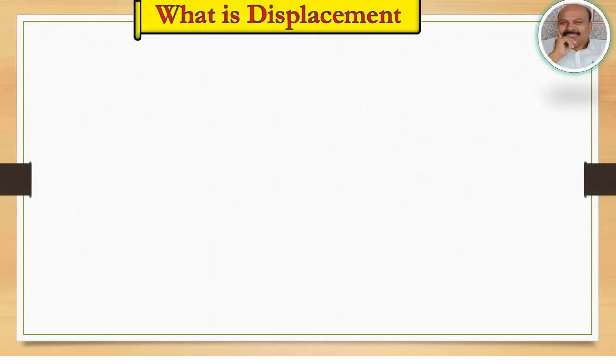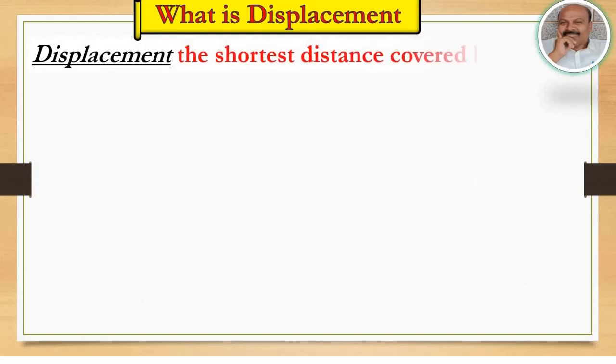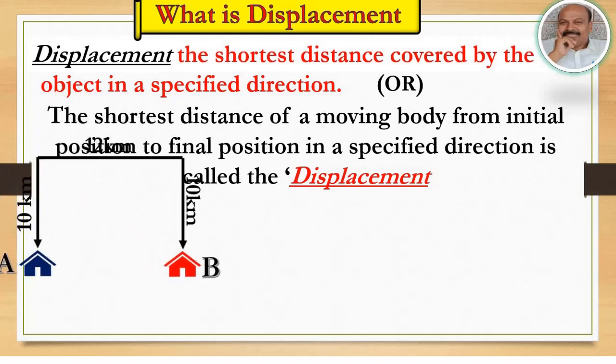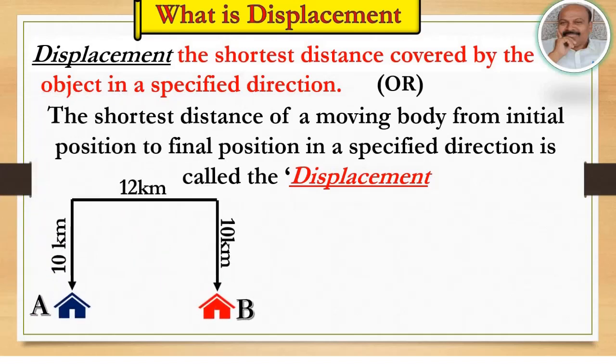What is displacement? Displacement is the shortest distance covered by the object in a specified direction. Or, the shortest distance of a moving body from initial position to final position in a specified direction is called the displacement.